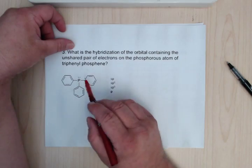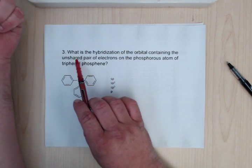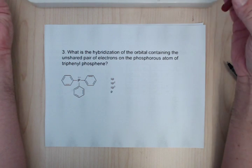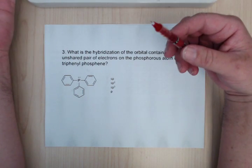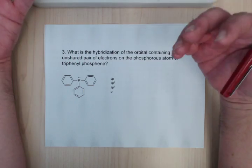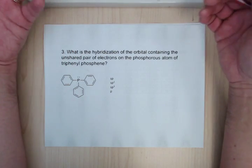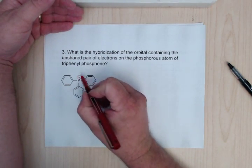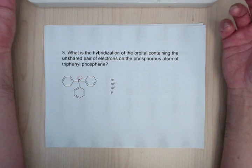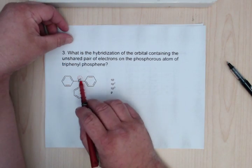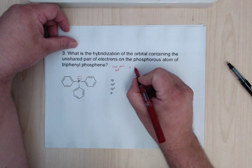So for this one, the question is, what is the hybridization of the orbital containing the unshared pair of electrons in the phosphorus atom? You have to be a little careful for this to say, is it part of an aromatic ring or not? In this case, they are not. So all you really need to do is calculate hybridization. It's sort of a funky way of asking, what's the hybridization of the phosphorus? So remember, we're going to do lone pair sets plus bond sets.